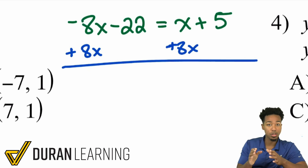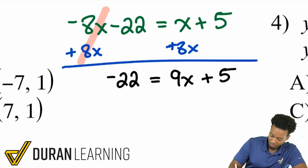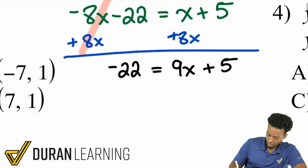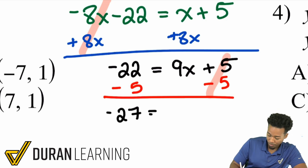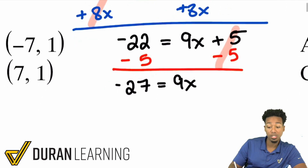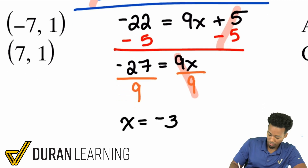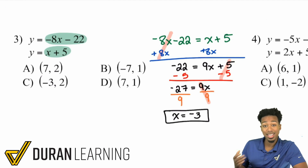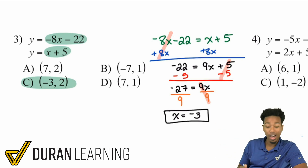Make sure you know how to solve equations before continuing — go back to that topic if needed. Adding 8x cancels on the left, giving negative 22 equals 9x plus 5. Subtract 5 from both sides: negative 22 minus 5 is negative 27, so negative 27 equals 9x. Divide both sides by 9 and x equals negative 3. The only answer choice with x equal to negative 3 is C, so no further work is needed.